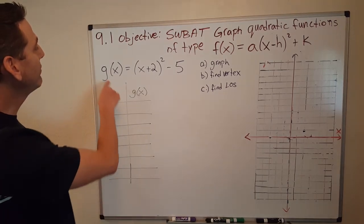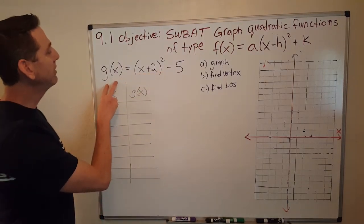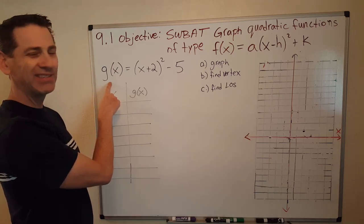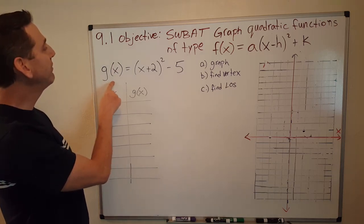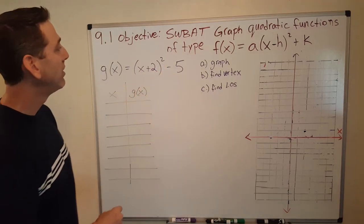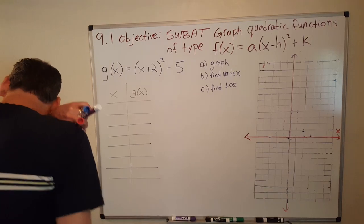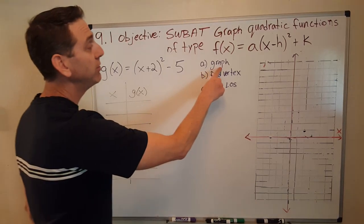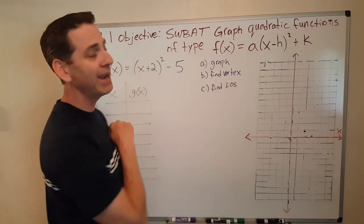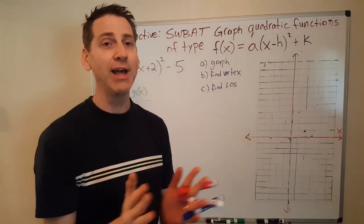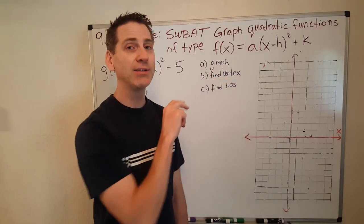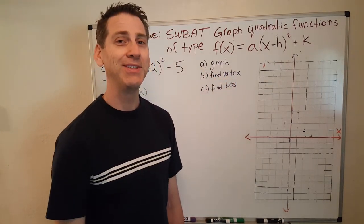Alright, so we have this function here, g(x), remember I said it could be g(x), f(x), it doesn't really matter, it's basically the y value. g(x) equals (x + 2) squared minus 5. We want to graph this function, find the vertex and the line of symmetry. And if you were with me in the last video, you probably already know the vertex and the line of symmetry right now. Do you see it?